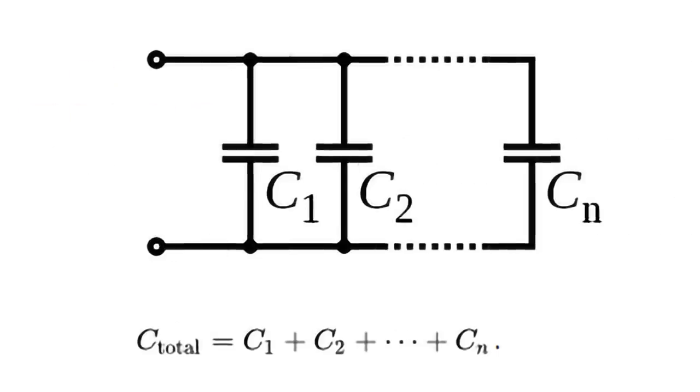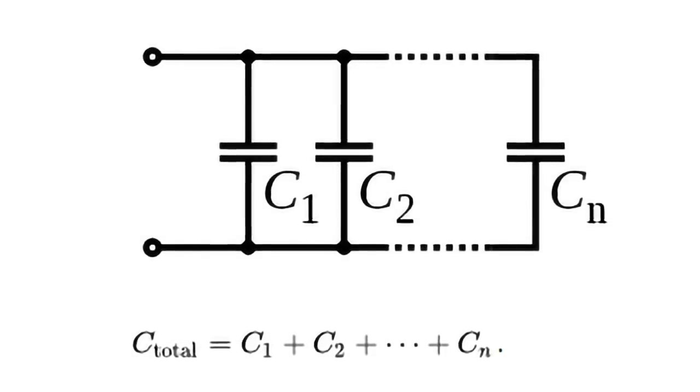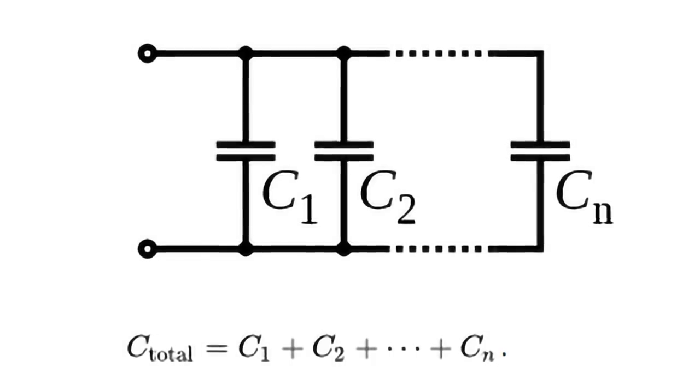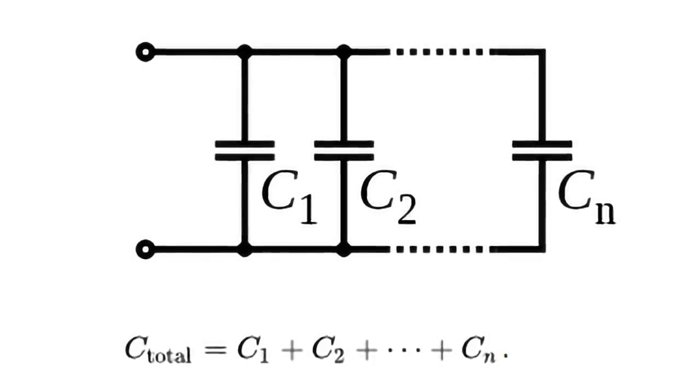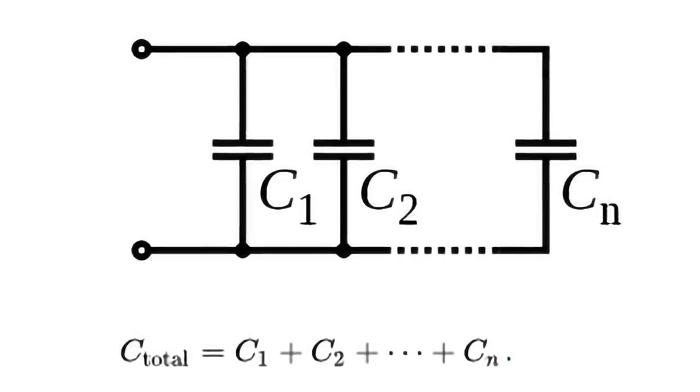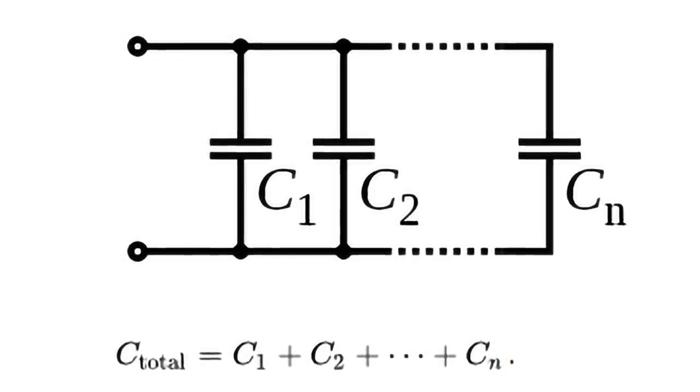When put in parallel, their capacitance is additive. With all of the positive plates on one side and all the negative plates on the other, capacitors in parallel act like one giant capacitor, but with all of the areas of their plates added together. Capacitance increases with the area of its plates, so the capacitance becomes the total capacitance of all the capacitors combined.